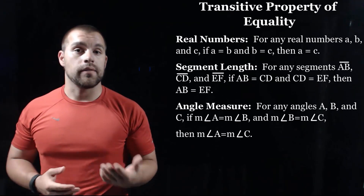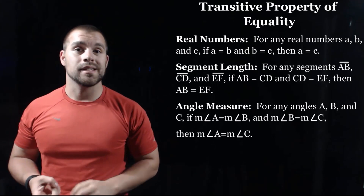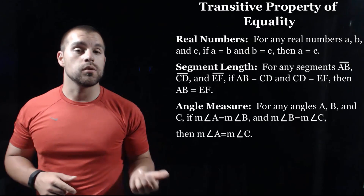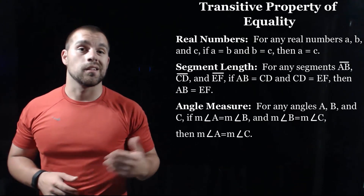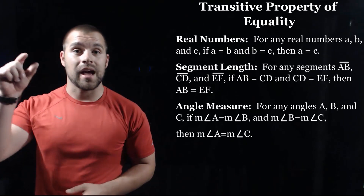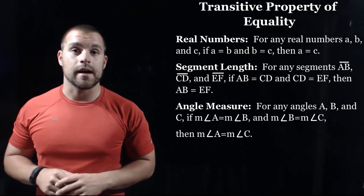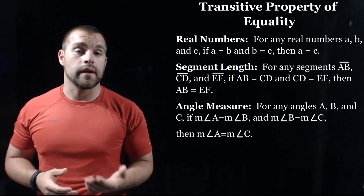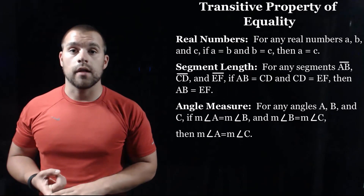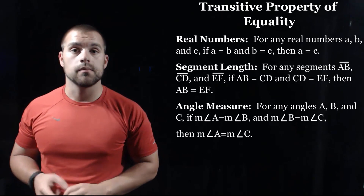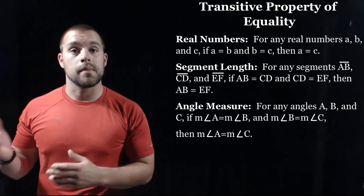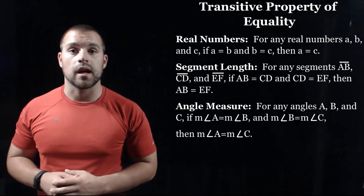For the segment case, we're going to have three segments AB, CD, and EF. If the length of AB equals the length of CD, and the length of CD equals the length of EF, then the length of AB equals the length of EF. And for angles, we have three angles A, B, and C. If the measure of angle A equals the measure of angle B, and the measure of angle B equals the measure of angle C, then the measure of angle A equals the measure of angle C.